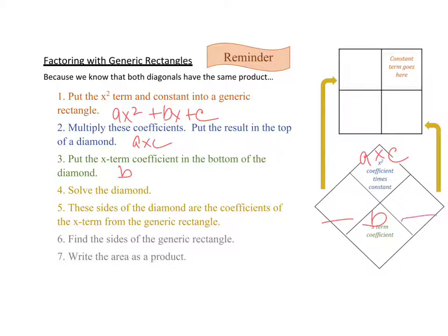And then we find the two numbers that multiplied together equal the top number and added together equal the bottom number. When we find those, we pop them into our generic rectangle to try and determine our sides which amount to our product.